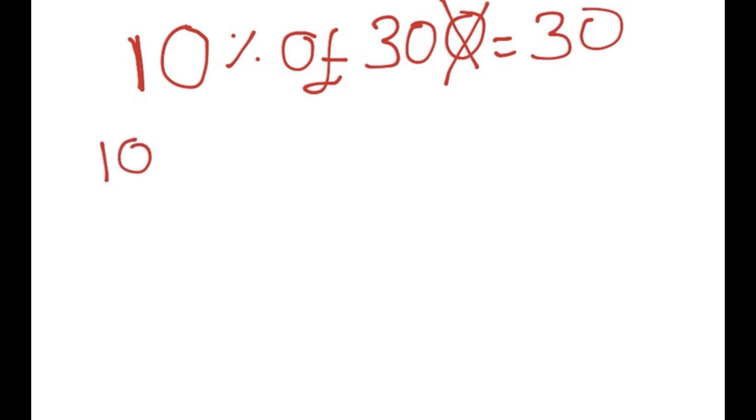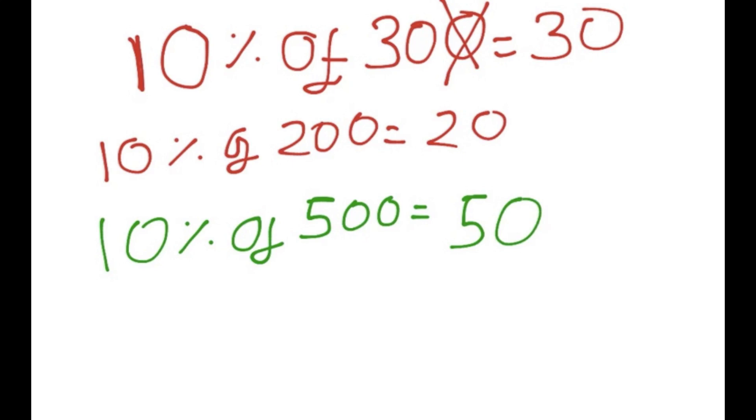For example, if we had 10% of 200, the answer would just be 20. So you're effectively dividing by 10. Let's do another one. Say I gave you 10% of 500. Here, we would divide by 10 and we just end up with 50. So it's quite simple, and this will really help you to find the more complicated percentages which you'll see now.